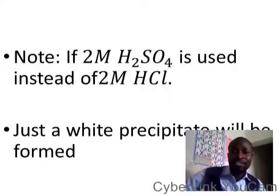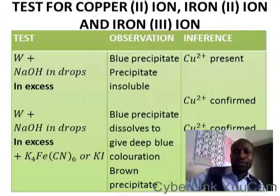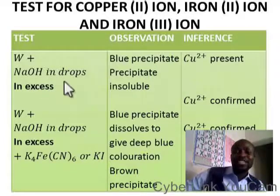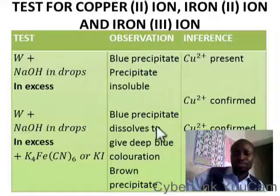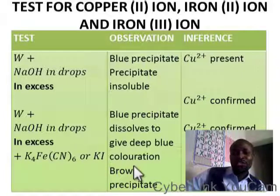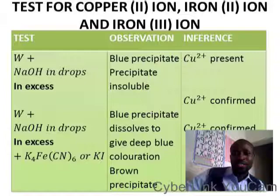For the test for copper 2 ion: W plus NaOH in drops and in excess — if you have a blue precipitate that is insoluble upon addition of excess sodium hydroxide, Cu²⁺ is present. W plus sodium hydroxide in drops gives a blue precipitate which deepens to a deep blue coloration, confirming Cu²⁺. When you add K₄[Fe(CN)₆] or KI, the coloration turns to a brown precipitate, totally confirming copper 2 ion.